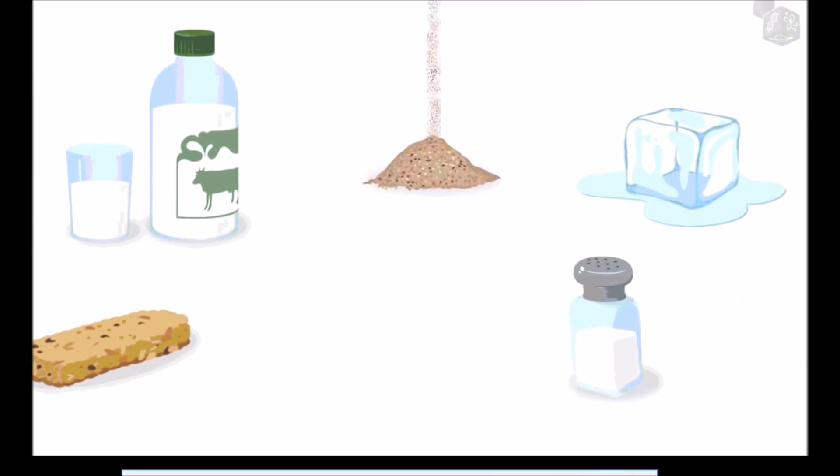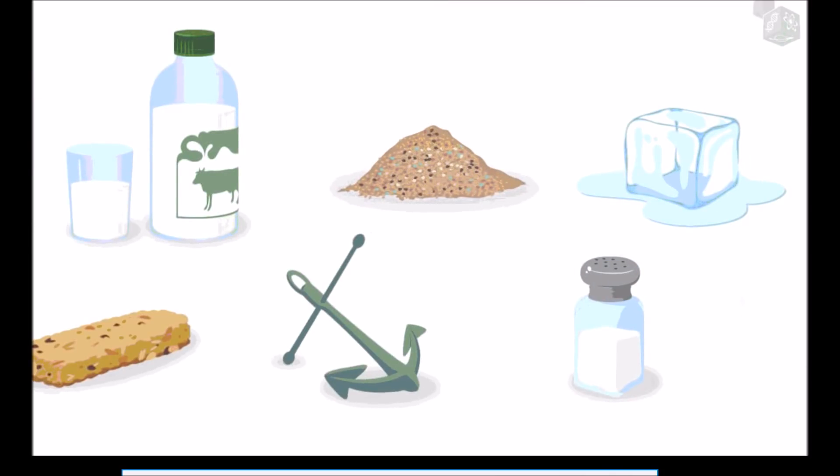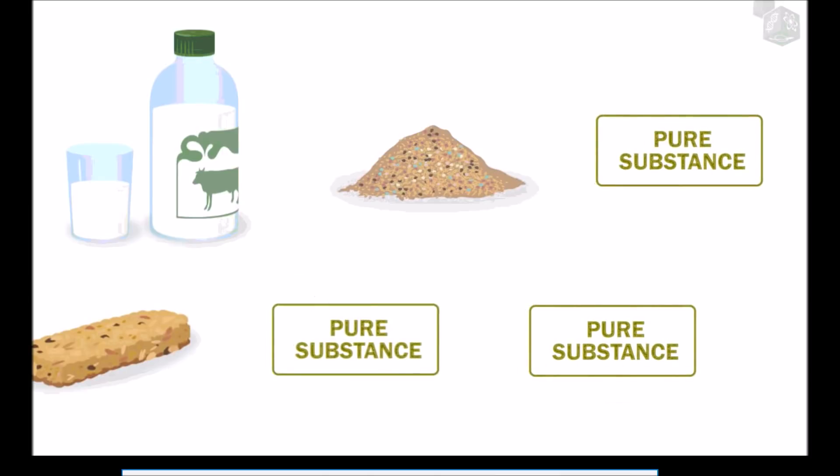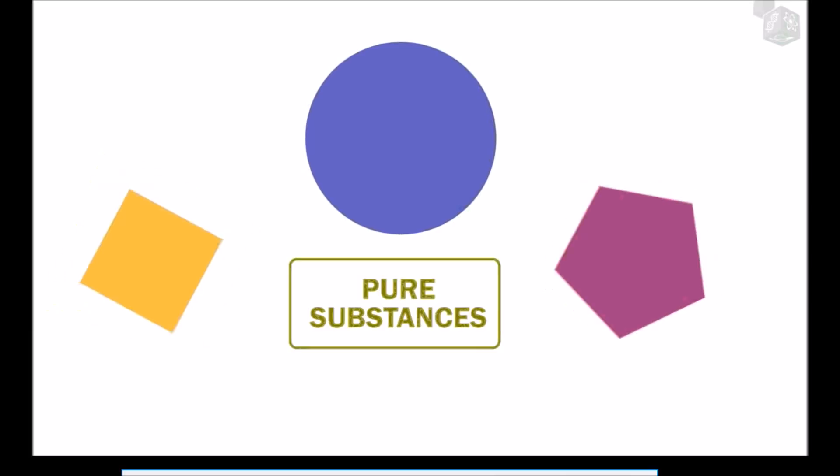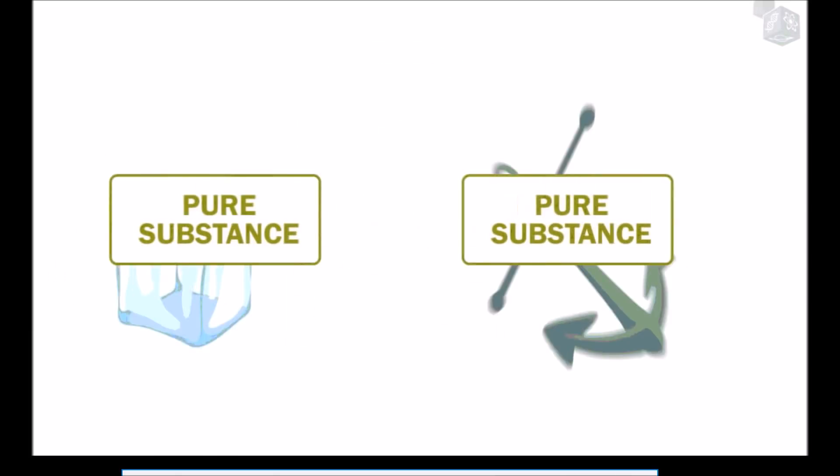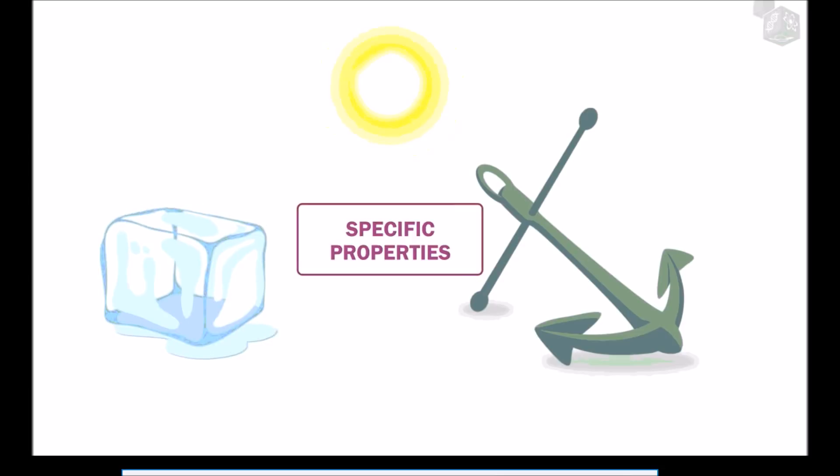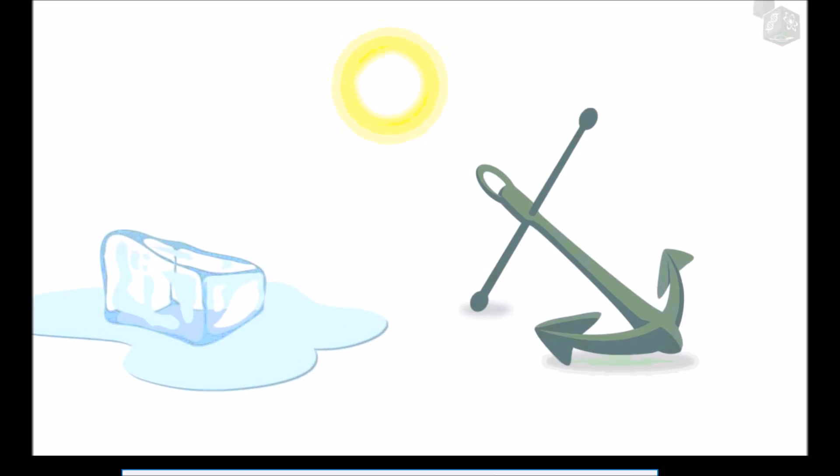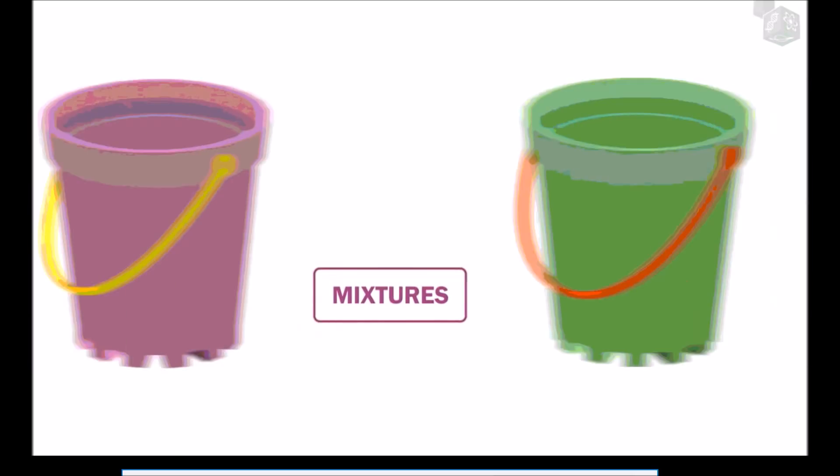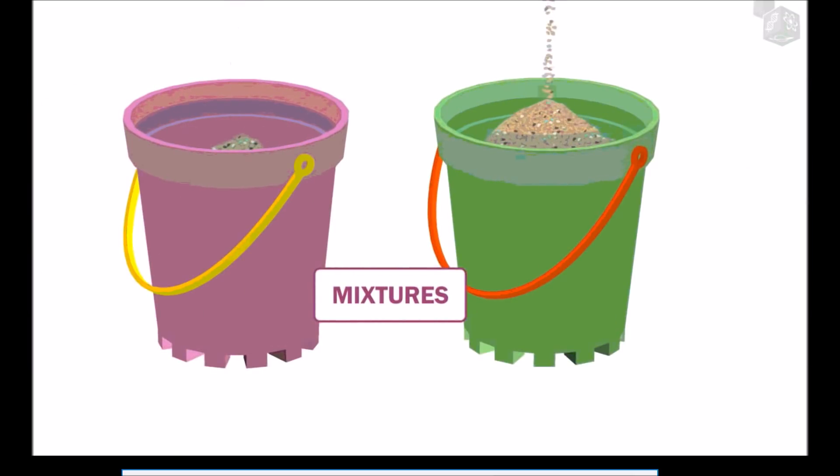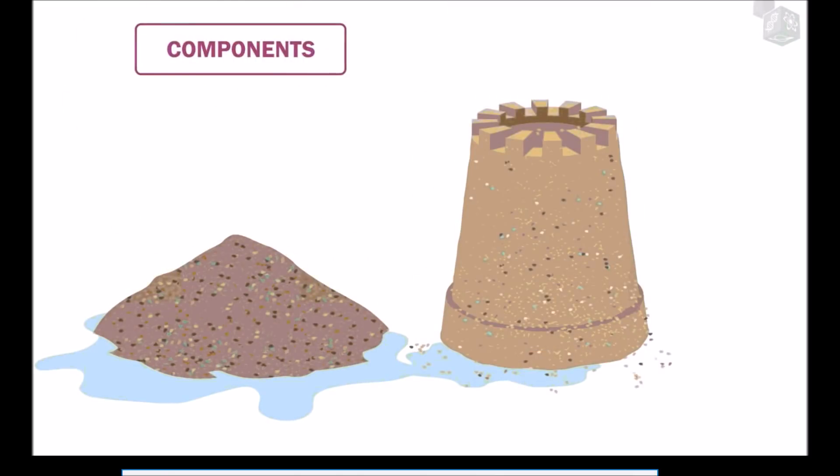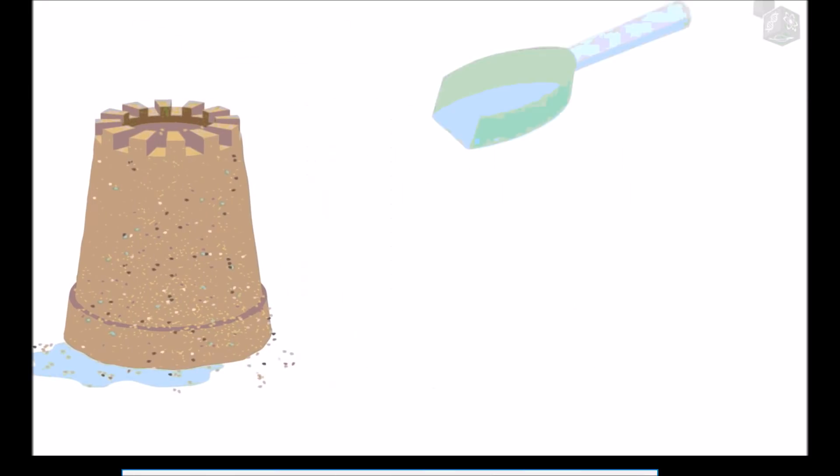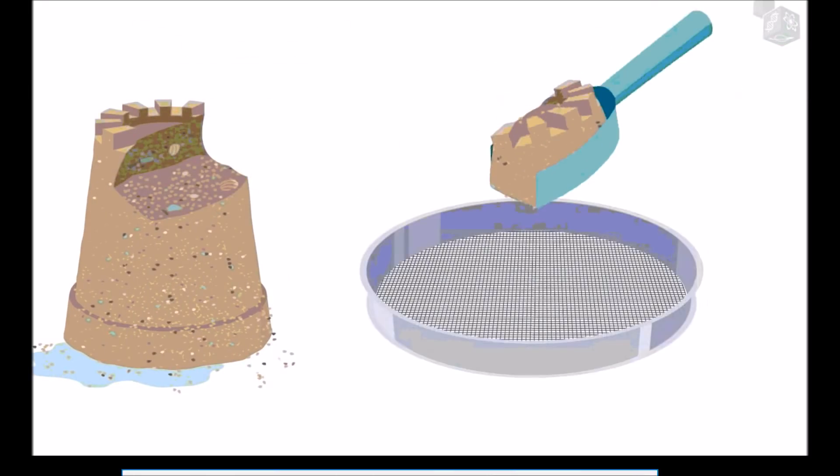We are surrounded by countless substances. Some are pure. Pure substances are, but the large majority are formed by mixtures of two or more pure substances. Pure substances have a homogeneous appearance. Each pure substance is characterized by having specific properties that distinguish them from all other substances. In contrast, mixtures do not have specific properties. Their properties depend on the substances, or components, that form them.